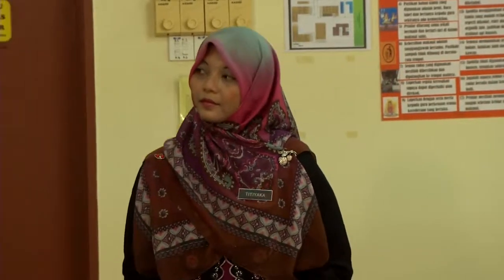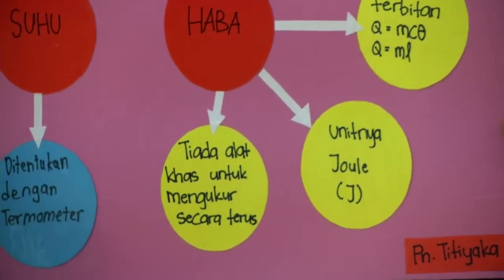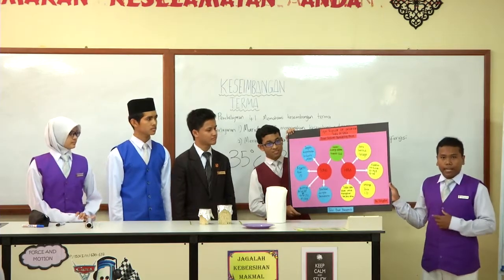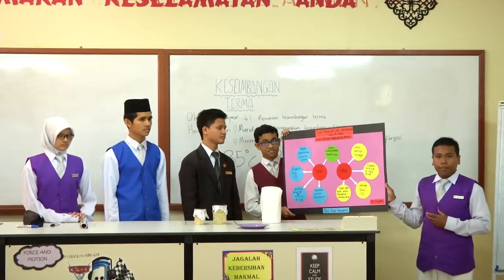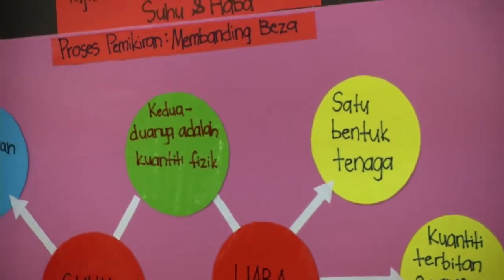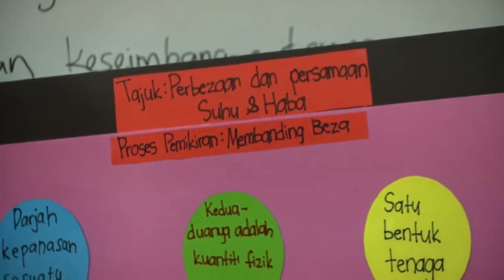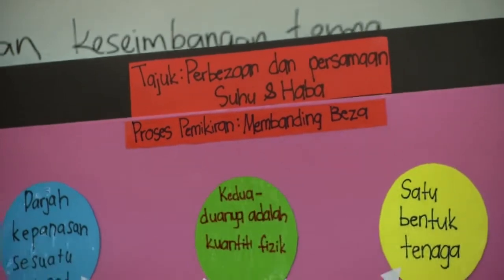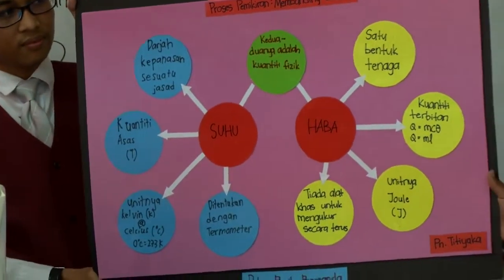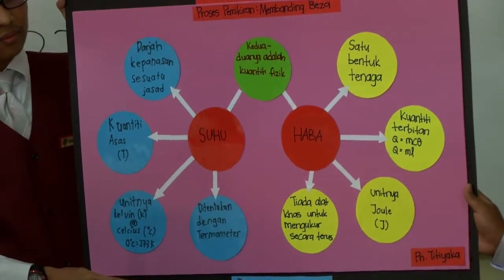Haba dipindahkan daripada objek yang lebih panas kepada objek yang lebih sejuk. Apabila sesuatu objek dipanaskan, tenaga haba akan diserap dan suhu objek tersebut akan meningkat. Kemudian, apabila objek tersebut disejukkan, ia akan melepaskan tenaga haba dan suhu objek tersebut akan berkurang. Seterusnya, kita lihat apakah yang berlaku terhadap mee tersebut.